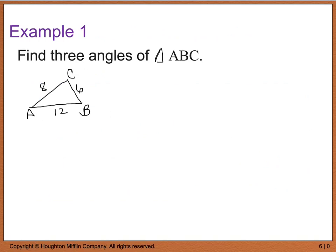For example one, we want to find the three angles of triangle ABC. We're given that side length a is 6, b is 8, and c is 12. As you'll notice, we cannot use the law of sines because we are not given at least one angle, so we have to use the law of cosines: a squared equals b squared plus c squared minus 2bc times the cosine of A.